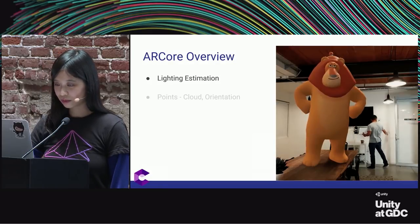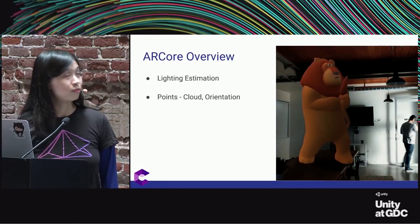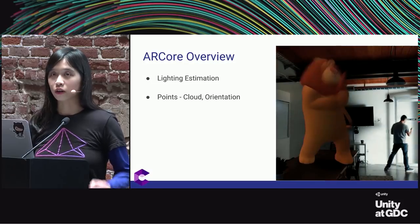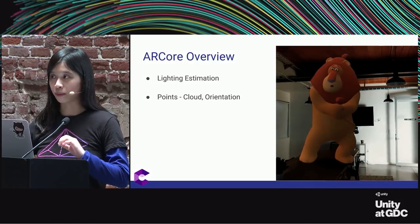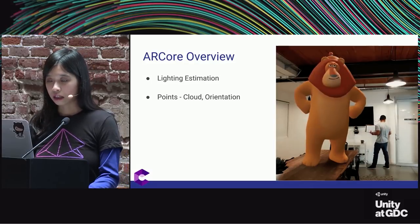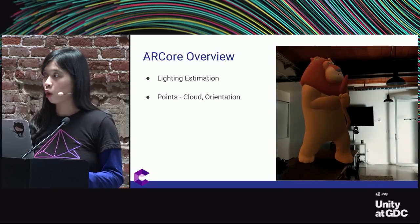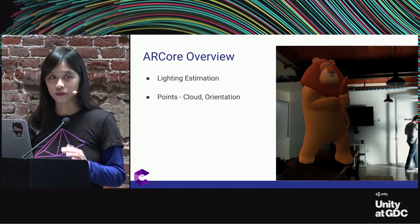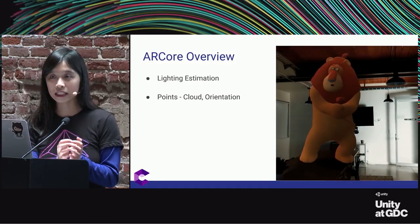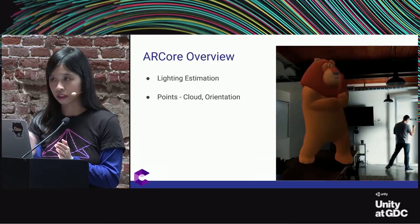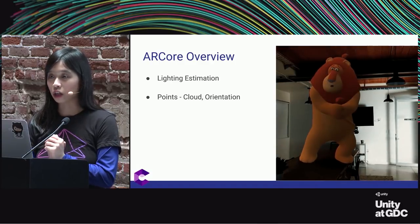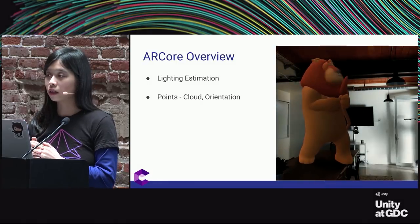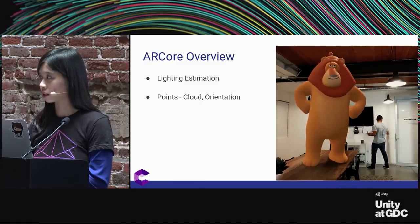Finally, ARCore has point clouds. These are features your eye can pick out at a distance. There are normal points and oriented points. When there is a cluster of points together, we can estimate the normal perpendicular to the surface. This allows us to place objects on surfaces at an arbitrary slope — not exactly a non-horizontal plane, but close enough.